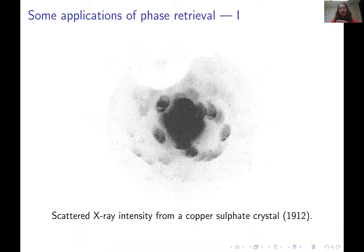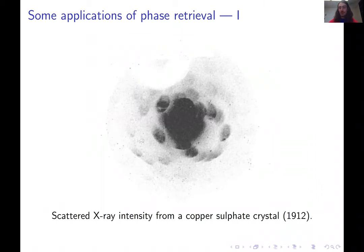How is phase retrieval related to this picture? As I told you, this is the magnitude of a Fourier transform. So if you want to recover the underlying signal — the element of which we've taken the Fourier transform — we need to assign a phase to this magnitude before we can take the inverse Fourier transform. That's how phase retrieval comes into the picture.